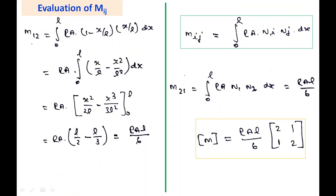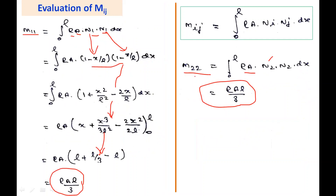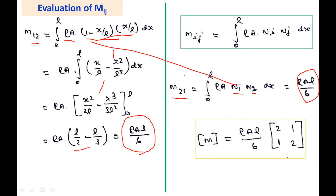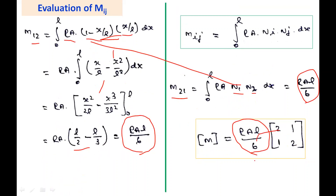For M12 = integral from 0 to L of ρA·N1·N2 dx, substituting N1 = 1 − x/l and N2 = x/l, multiplying and integrating gives M12 = ρAl/6. Similarly, M21 = ρAl/6. Arranging M11, M22, M12, M21, the 2×2 mass matrix has ρAl/6 taken as a common factor, giving the consistent mass matrix: (ρAl/6)·[2, 1; 1, 2].